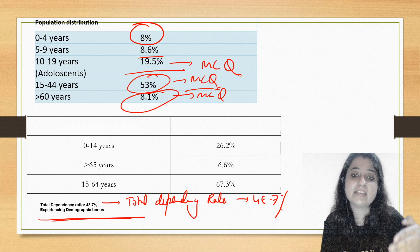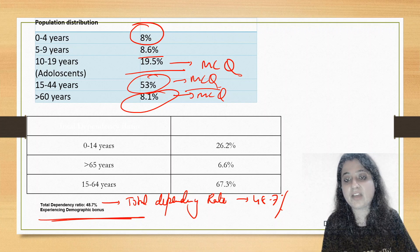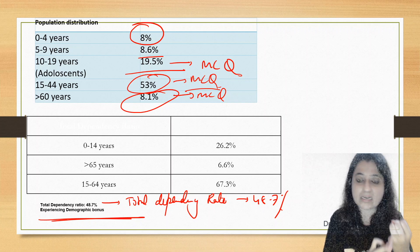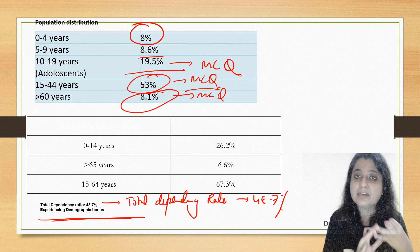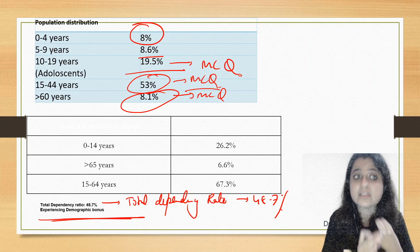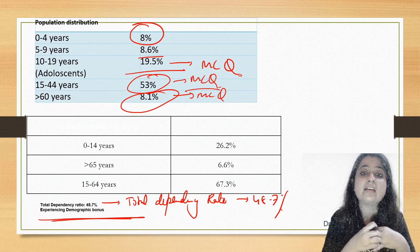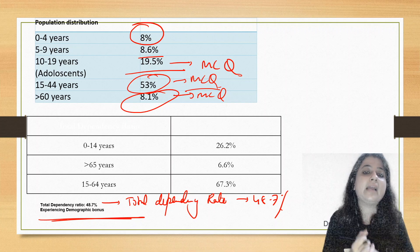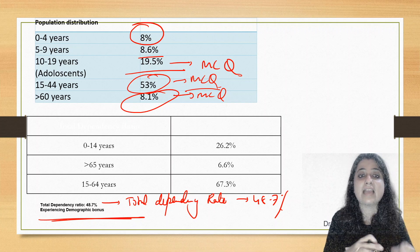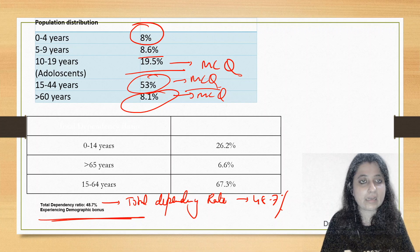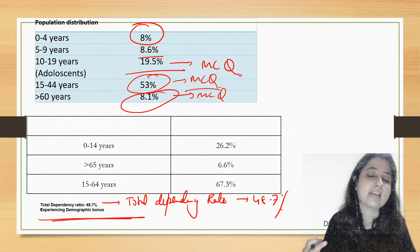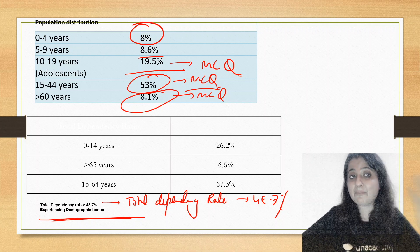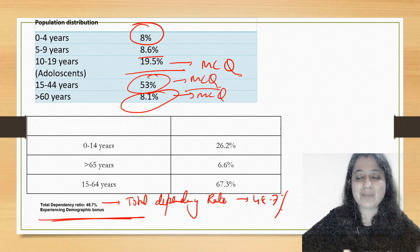The dependent population aged 0–14 is 26% and those over 65 are 6%. Key things to remember for MCQs include: current under-5 mortality, infant mortality, maternal mortality ratios, percentage distribution for adolescents and elderly, rural India's population share, and the current sex ratio of 899.